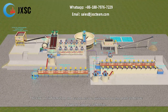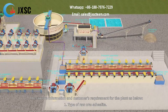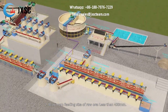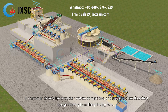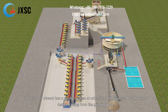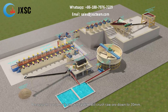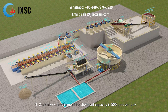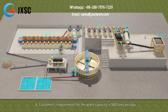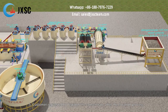The raw ore information and customer's requirements for the plant are as follows. Type of raw ore: Scheelite. Maximum feeding size of raw ore: less than 400 millimetres. The customer already has a crusher system at the mine site and requested the flowchart design starting from the grinding part, because the crusher system will crush raw ore down to 20 millimetres. Customer's required plant capacity is 500 TPD. Customer also requested to dewater the concentrate after the flotation process.